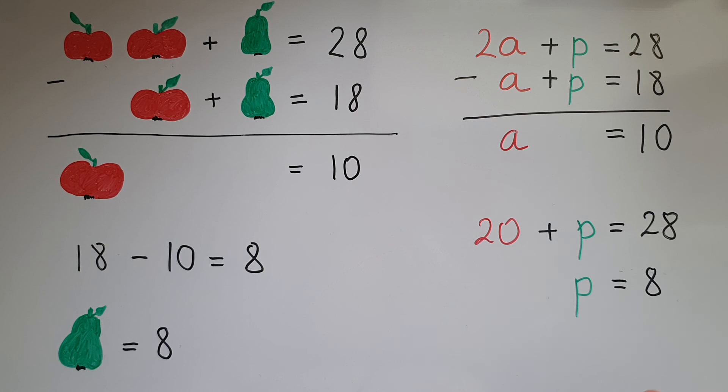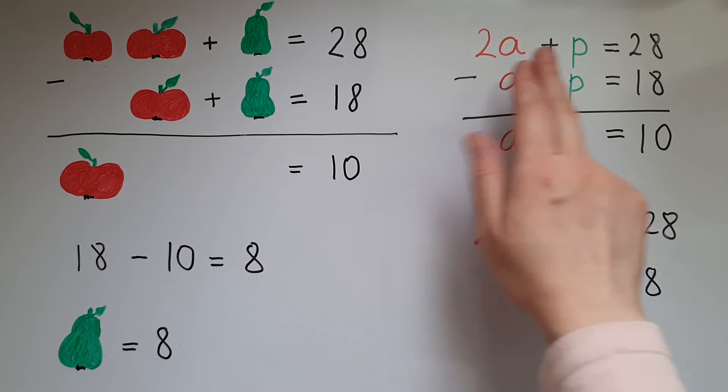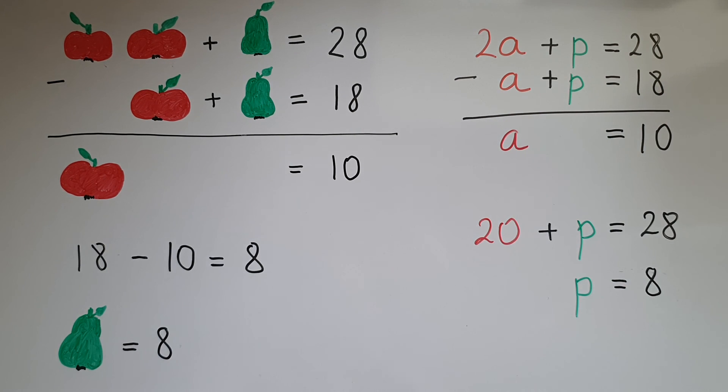To check, it's good practice to go and substitute this into both of the equations and find out if the equation is true. So 2 times 10 is 20, add 8 gives us 28. 10 add 8 equals 18. So it works.